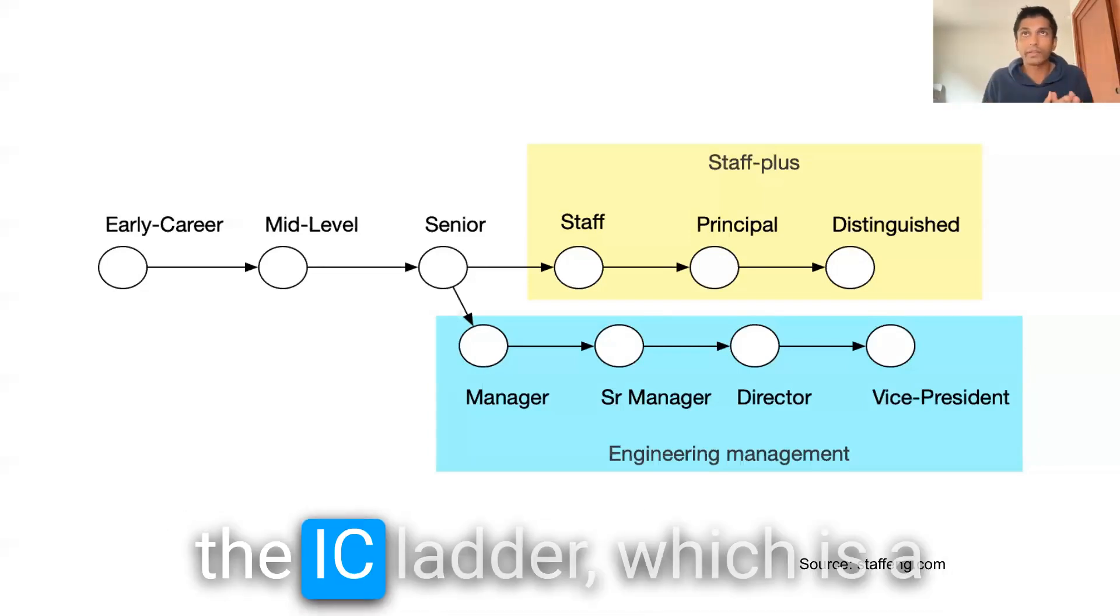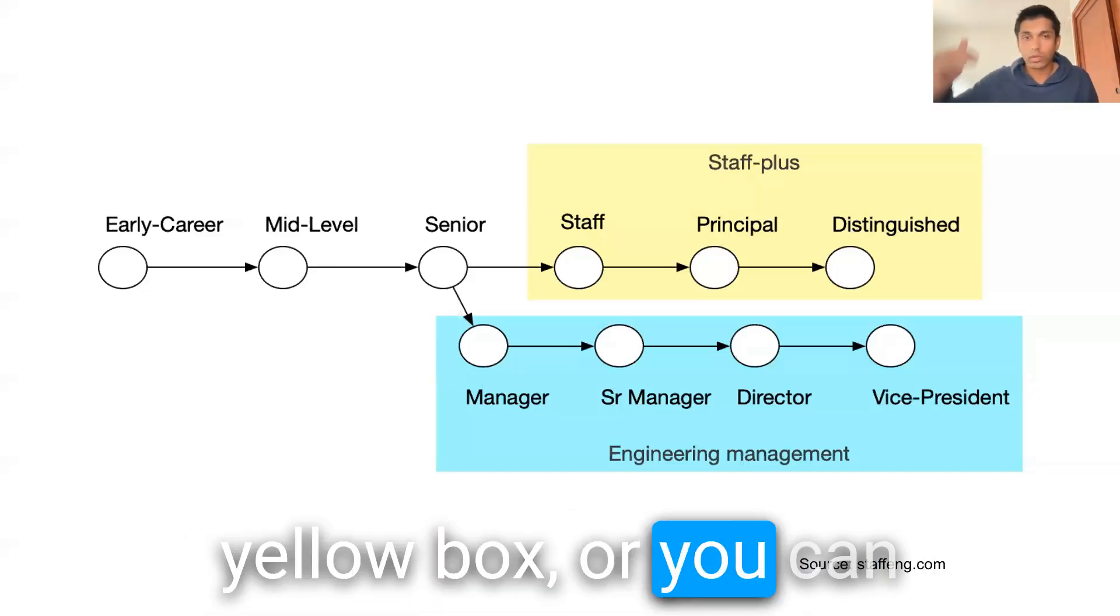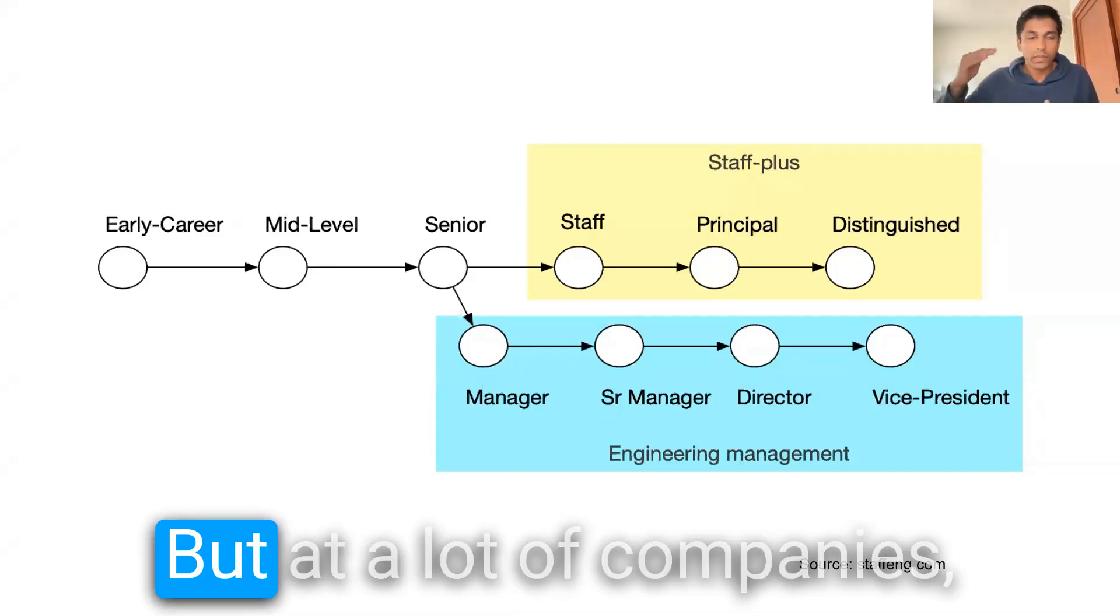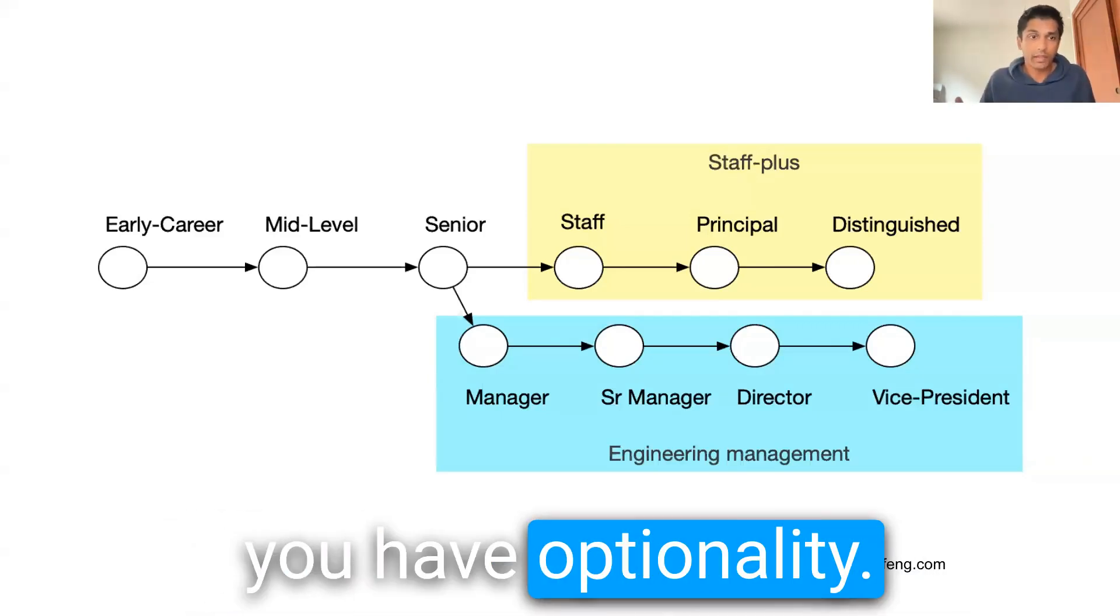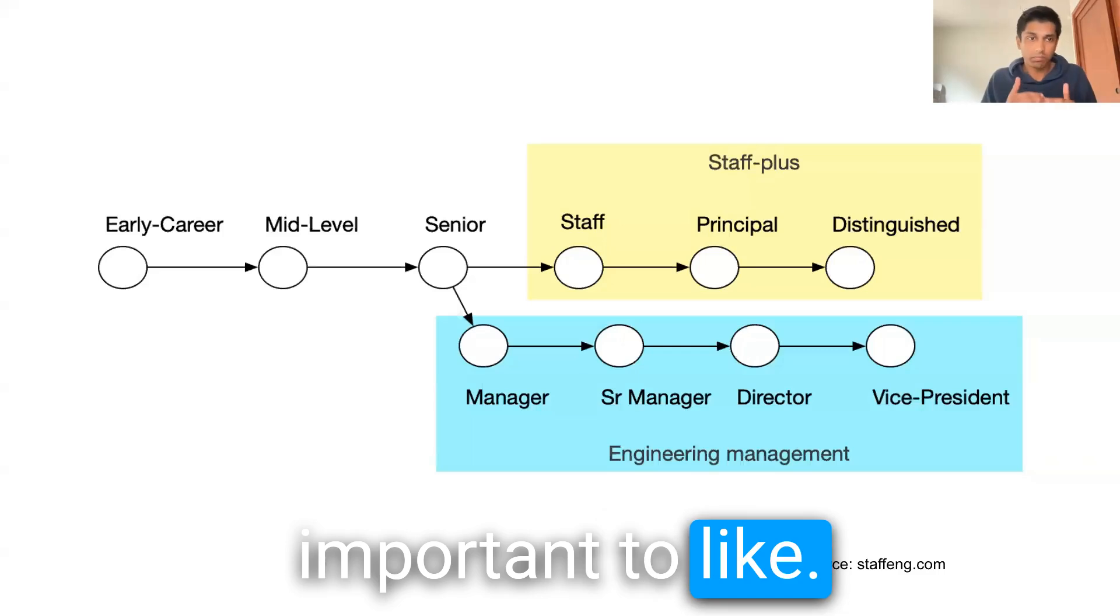You can either go down the IC ladder, which is a yellow box, or you can become a manager. But at a lot of companies, senior is like a terminal level. And that's where you have optionality. And that's why it's important to get to that point.